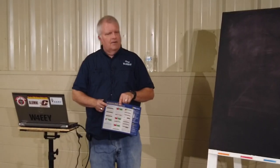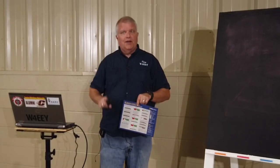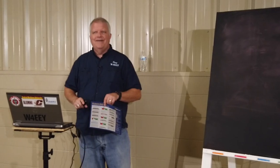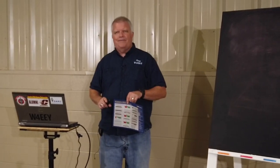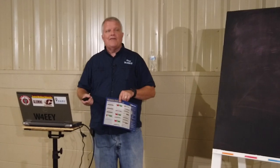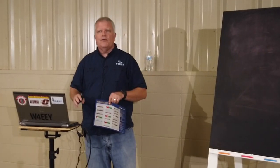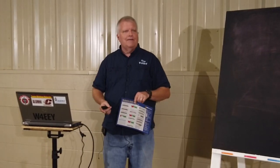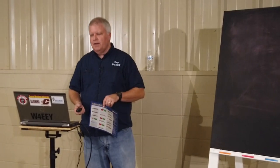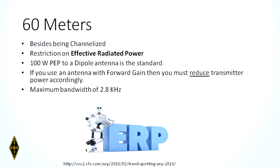Some radios do have memory channels preset for these particular things, which is a good idea — you can program memory channels so you're immediately right where you should be. Besides being channelized, 60 meters is restricted in power to 100 watts peak envelope power as applied to a dipole antenna — all in the fine print on the chart.